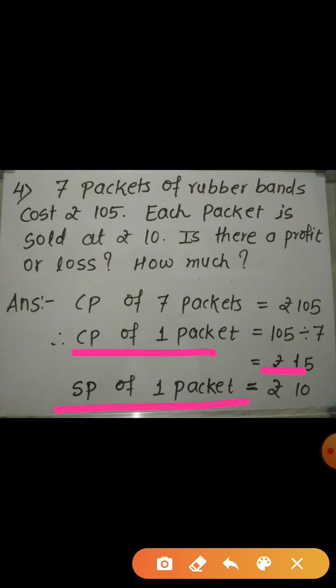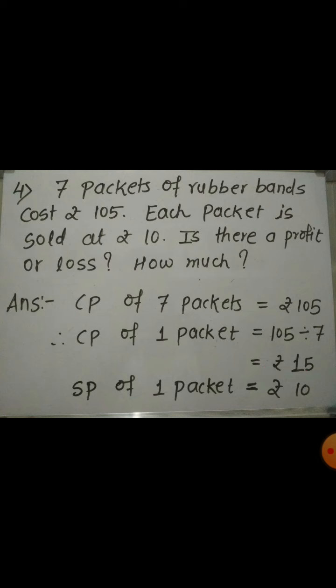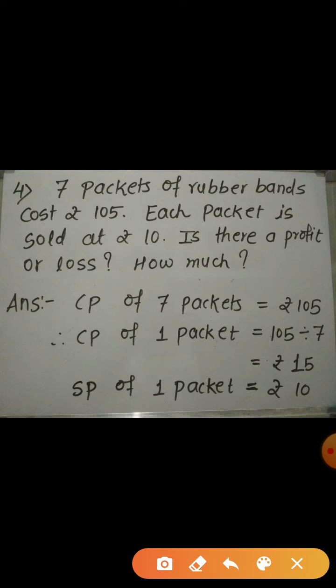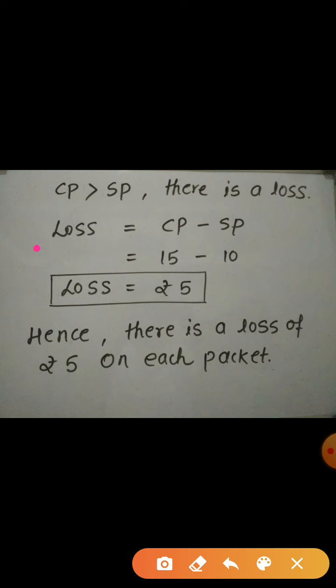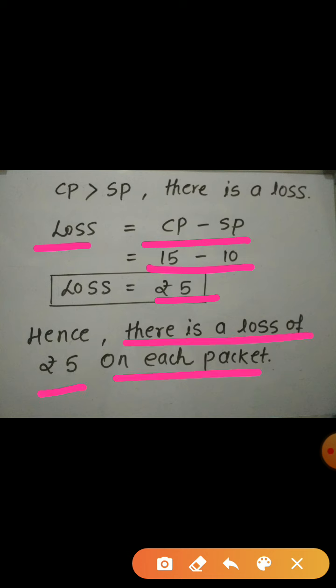The selling price of 1 packet is Rs. 10. Now observe which is more — CP or SP. Here CP is more. Since cost price is more than selling price, there will be a loss. So we use the formula of loss: Loss = Cost Price minus Selling Price. So 15 minus 10 gives Rs. 5. Therefore, there is a loss of Rs. 5 on each packet.